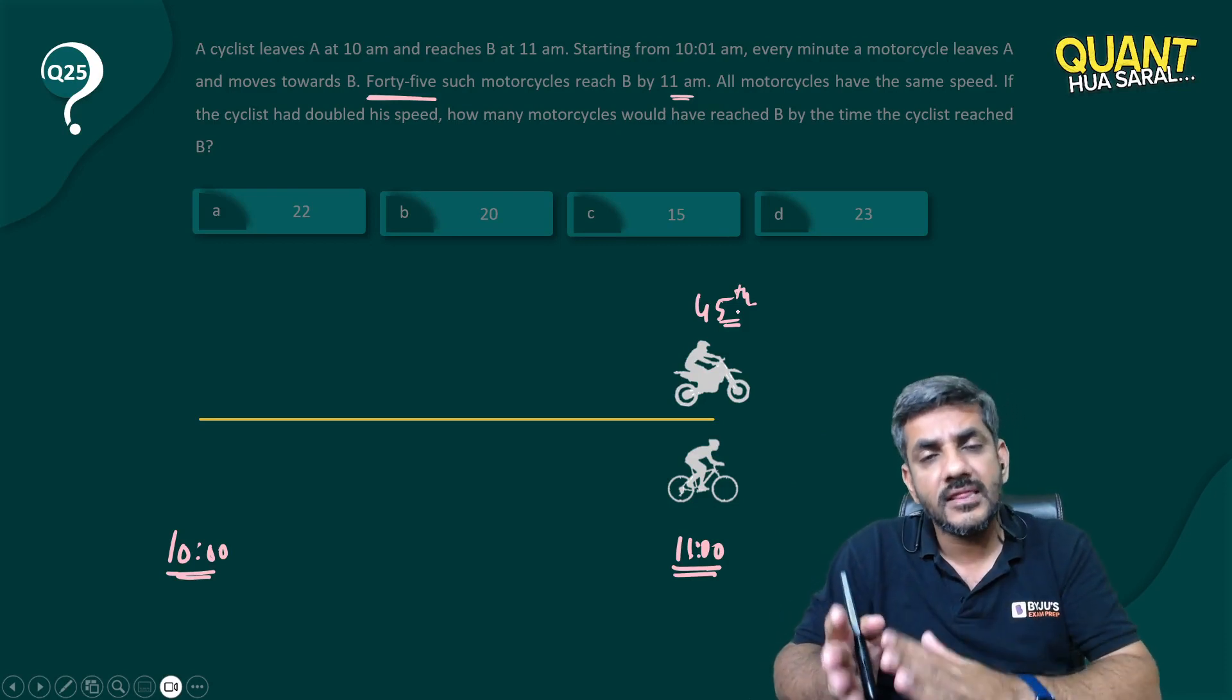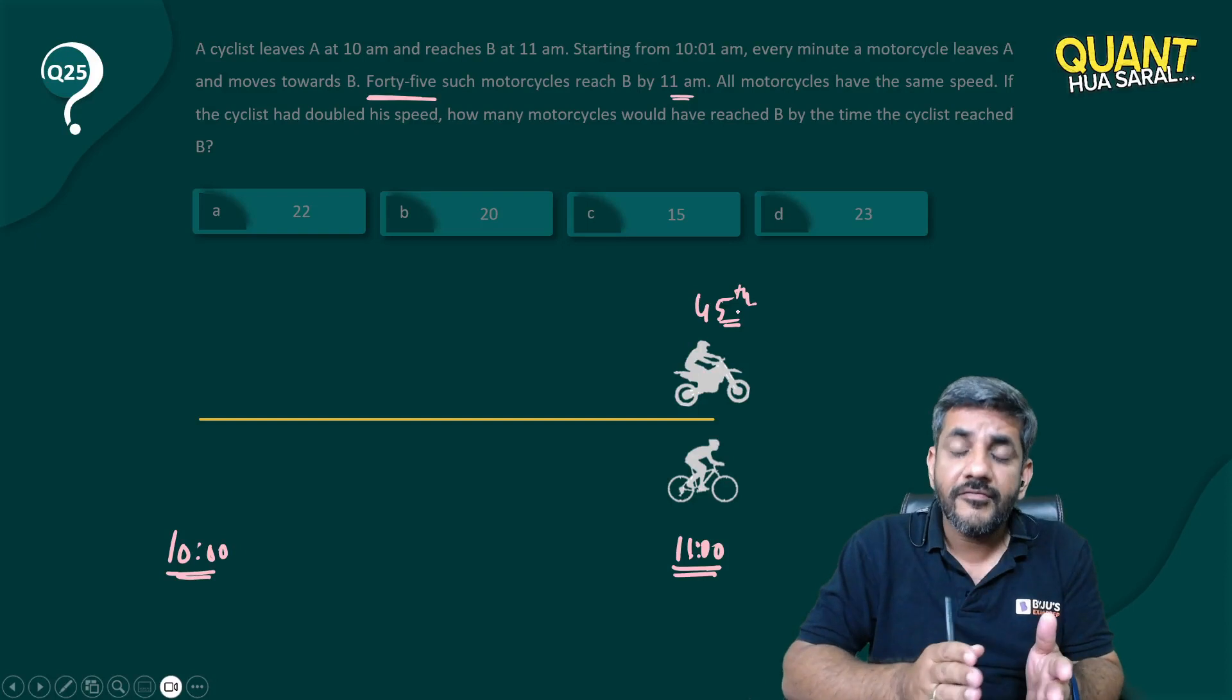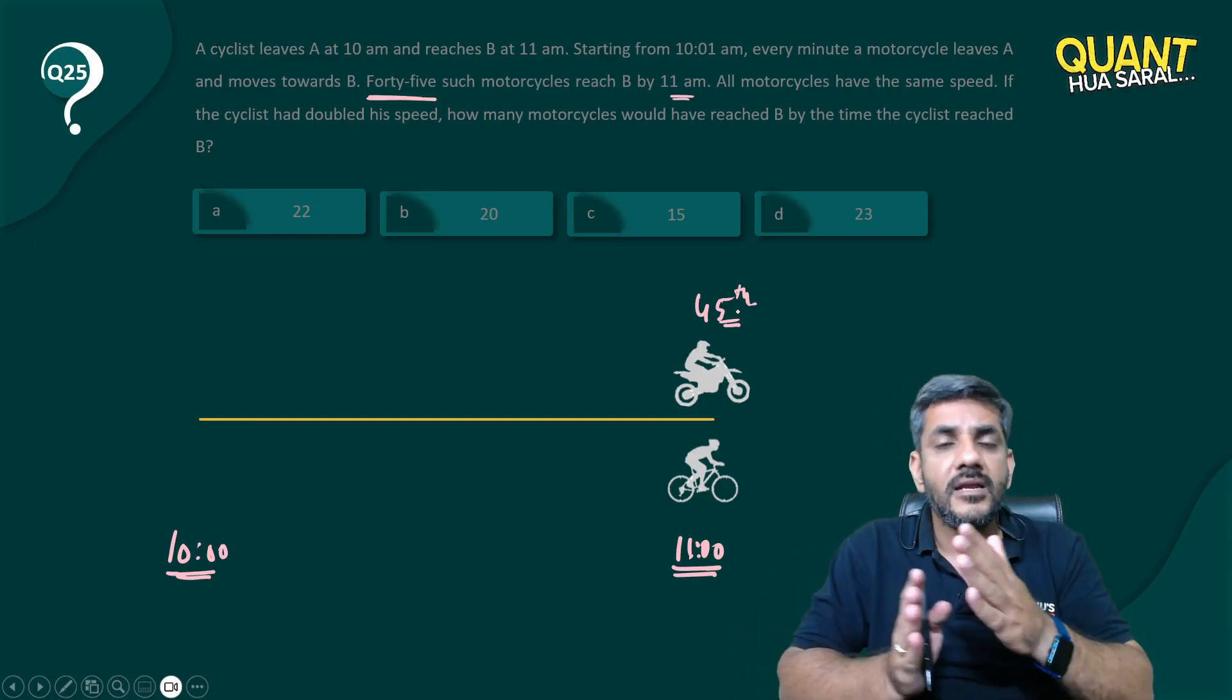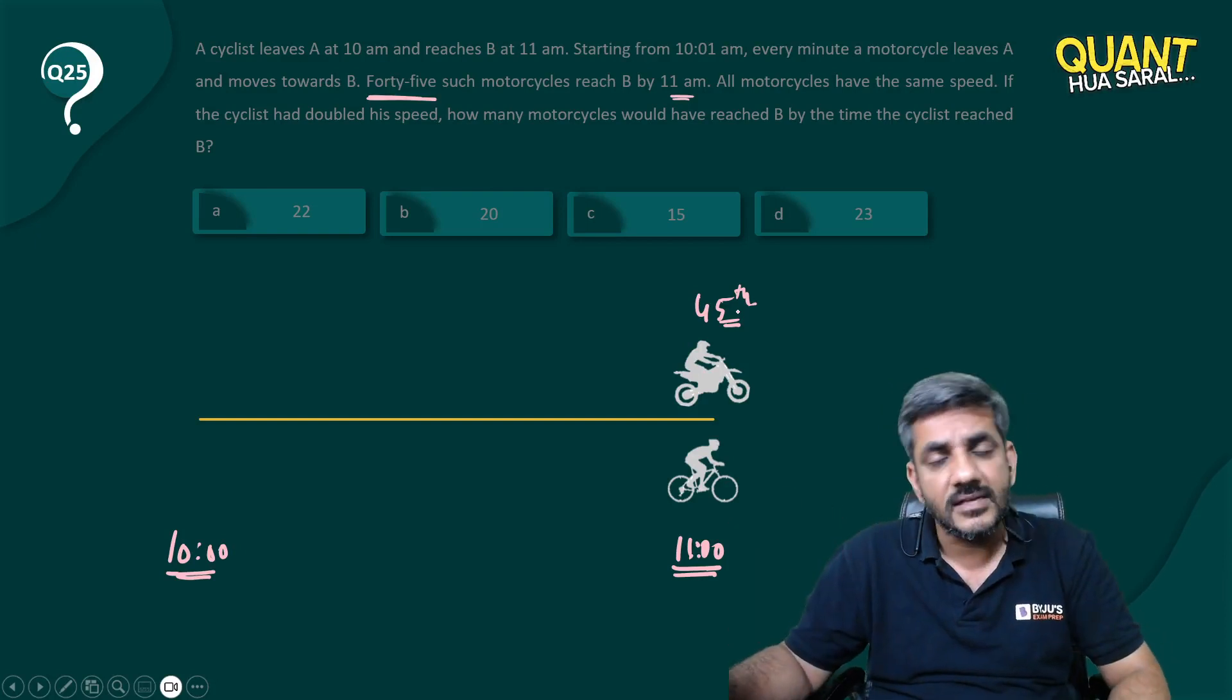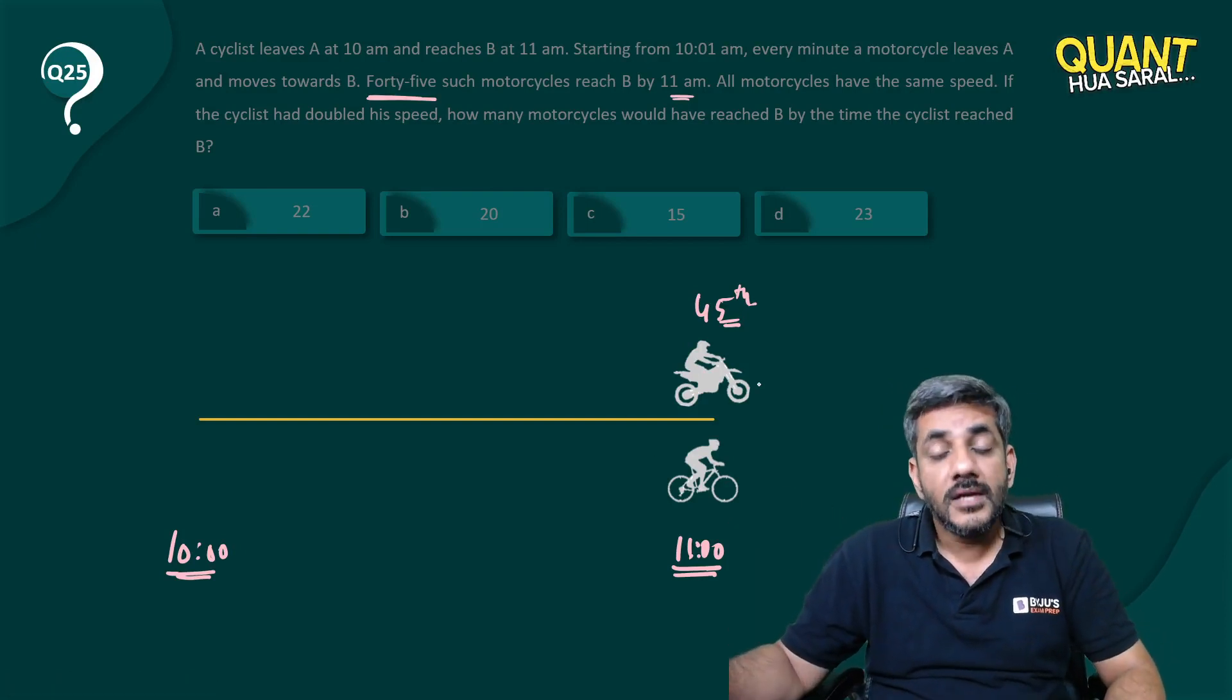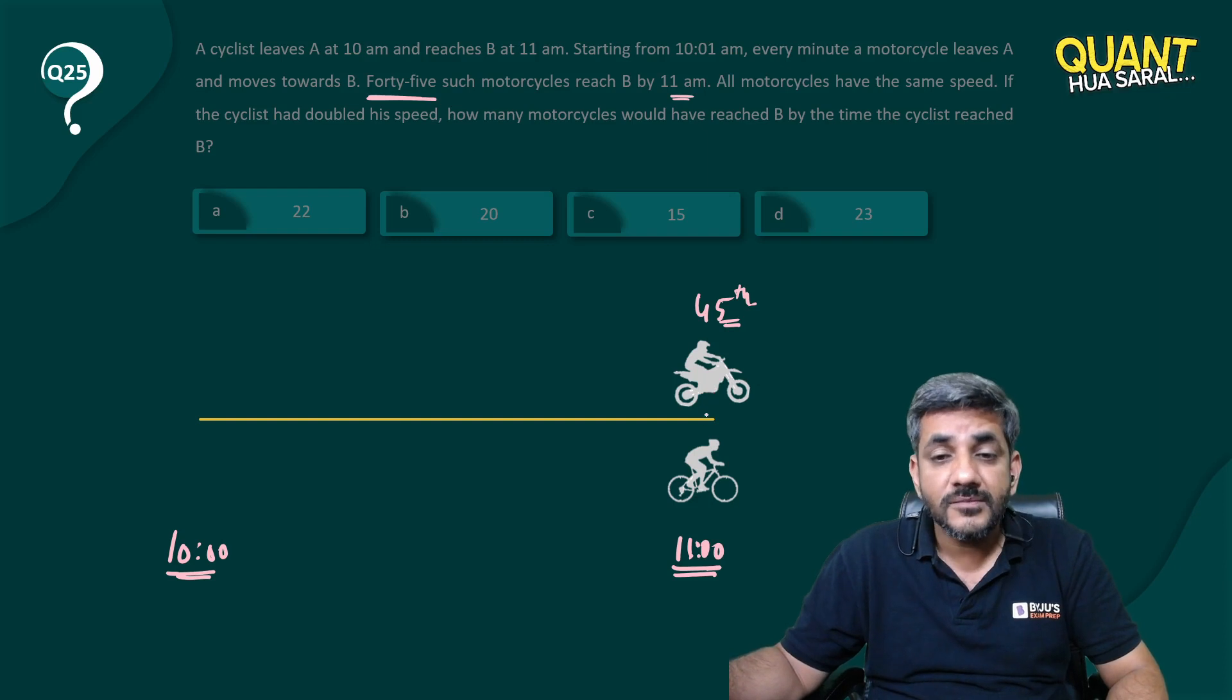But definitely after 10:59 and definitely before 11 he must have met 45 motorcyclists in this phase. Now the point is, because the 45th motorcyclist has met him here, at what time did this motorcyclist start from the point?